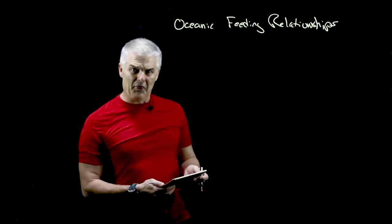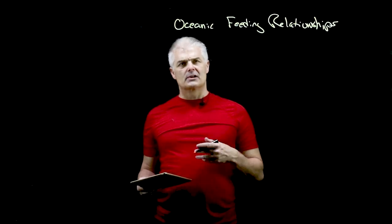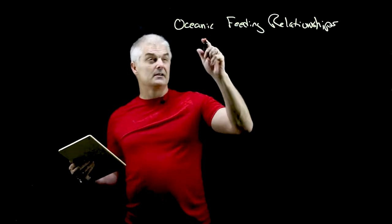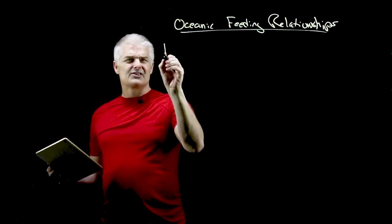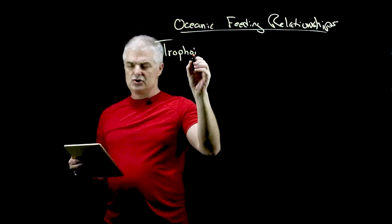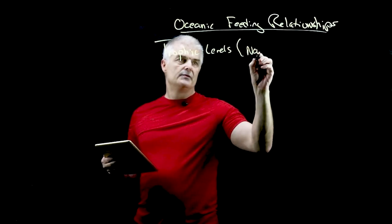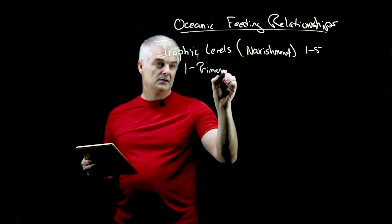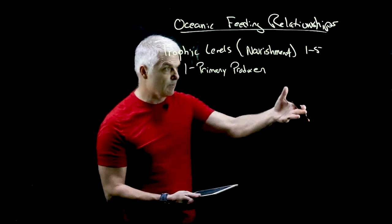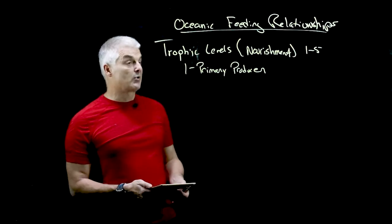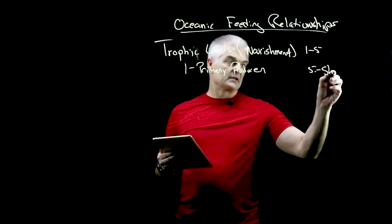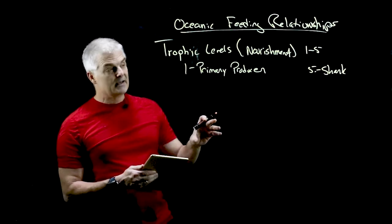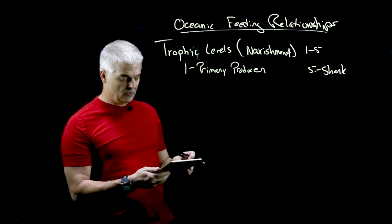Oceanic feeding relationships — what's up with that? You may recall from biology class that you learned about primary producers, food webs, these kinds of things, and that's true here in the ocean. We call them trophic levels — trophic by the way means nourishment. It's a scale from one to five where one would be the primary producer. In the case of the ocean, that's the phytoplankton doing most of the photosynthetic process, and then a five might be a shark, because as you go from level one to level five, the amount of energy transferred gets lower and lower.